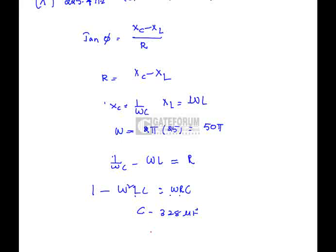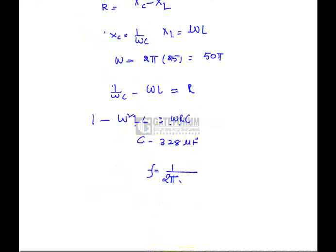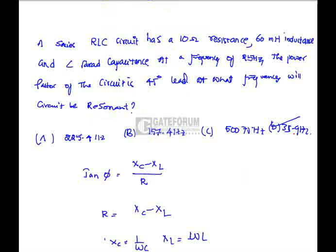After getting this, we need to calculate the resonance circuit. For a series RLC circuit, the resonance frequency is 1 by 2 pi square root LC. If we substitute, we will get it as 35.9 Hertz. Hence option D is correct.